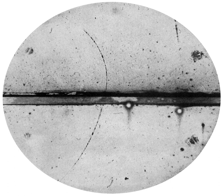A cine film was used to record the images. The diffusion cloud chamber was developed in 1936 by Alexander Langsdorff. This chamber differs from the expansion cloud chamber in that it is continuously sensitized to radiation, and in that the bottom must be cooled to a rather low temperature, generally colder than minus 26 degrees Celsius (minus 15 degrees Fahrenheit). Instead of water vapor, alcohol is used because of its lower freezing point. Cloud chambers cooled by dry ice or Peltier effect thermoelectric cooling are common demonstration and hobbyist devices. The alcohol used in them is commonly isopropyl alcohol or methylated spirit.